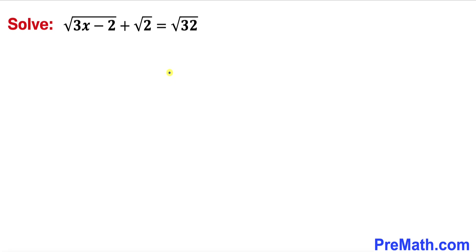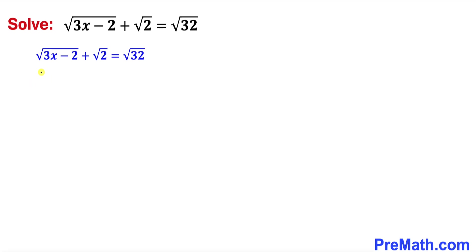Let's go ahead and get started with the solution and focus on this given equation. I have copied it down and let's move the square root of 2 to the right hand side. So therefore this equation becomes: square root of (3x minus 2) equals square root of 32 minus square root of 2.